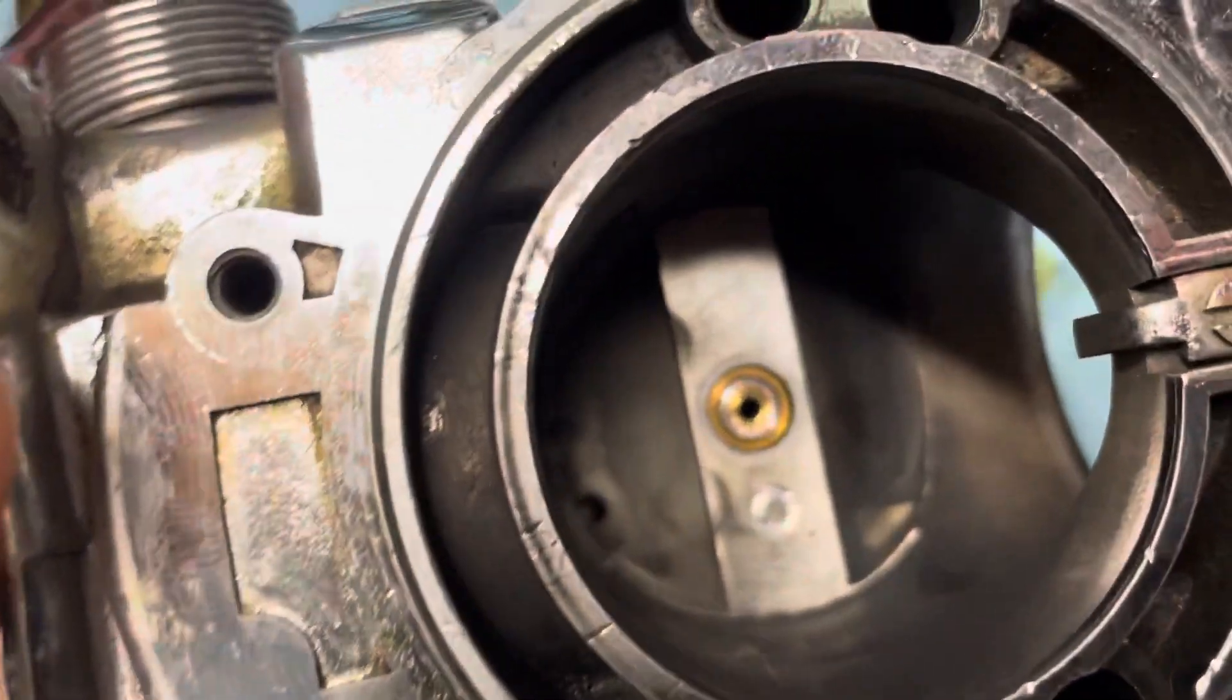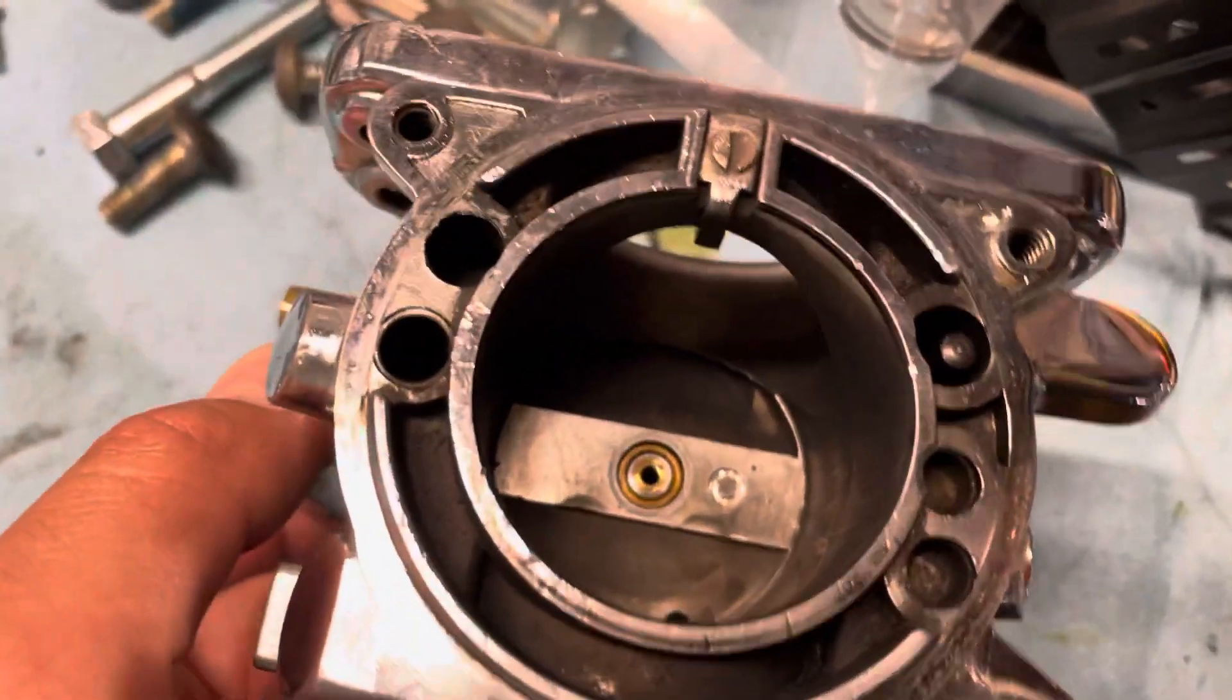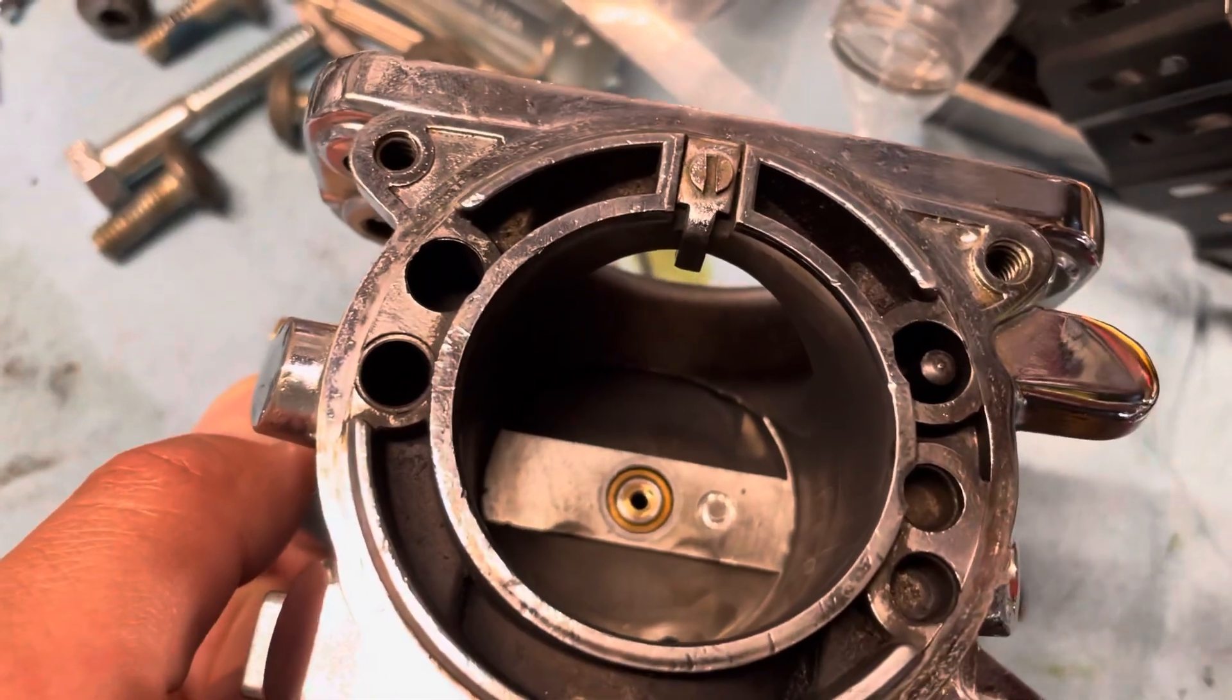And if you look down inside here, the main jet hole, when you normally run the tickler, that's this piece on the side, gas will squirt out there in a big huge stream.